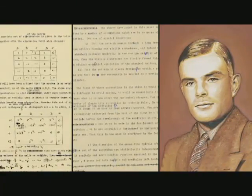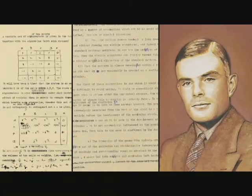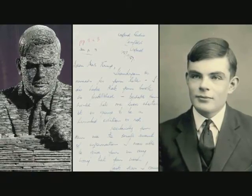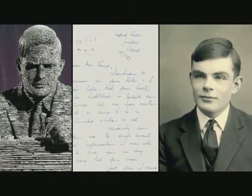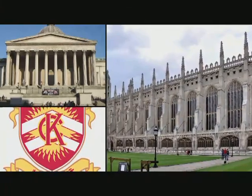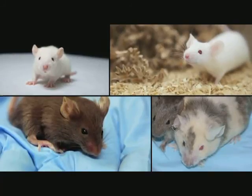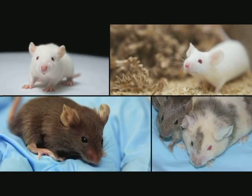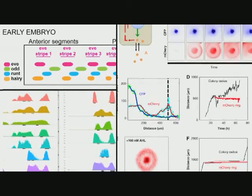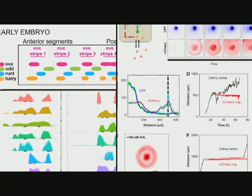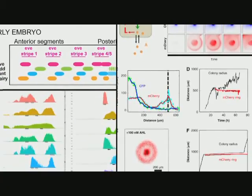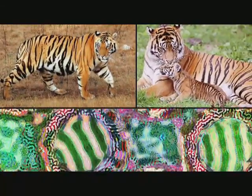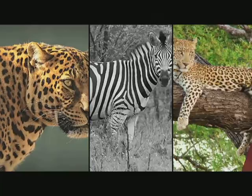When Turing published this theory, it was considered intriguing but speculative. Curiously enough, it was in 2012 — a centenary year — that this theory was verified experimentally, through an experiment at King's College London on mice. The researchers were studying the ridge patterns on the roof of the mouth in mice and managed to actually identify the pair of morphogens working together to influence where each ridge forms — the first time biologists could prove the direct implications of this 60-year-old theory.